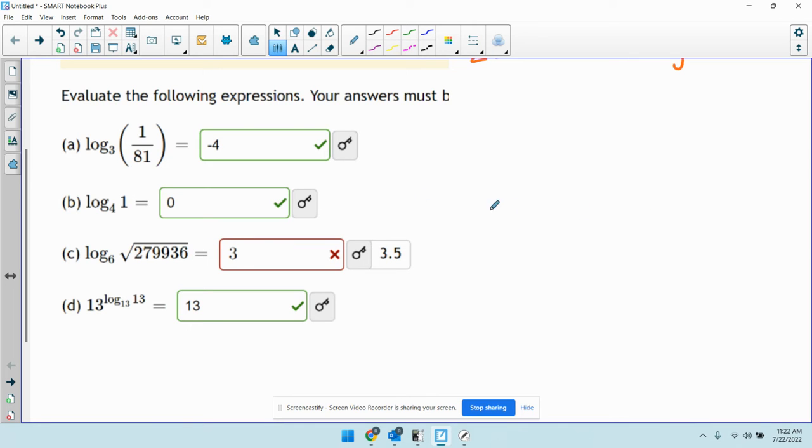So basically, what we're saying here is 6 to what power, you can put a question mark, you can put an x, whatever, equals the square root of 279936. That's what we're looking for.